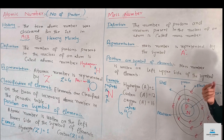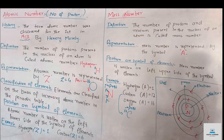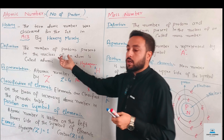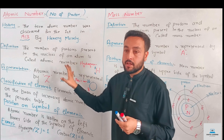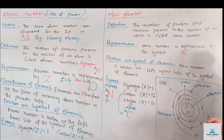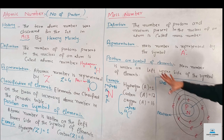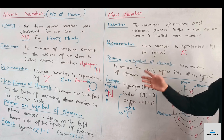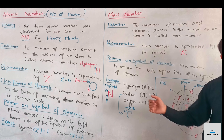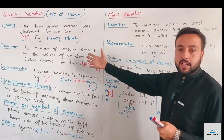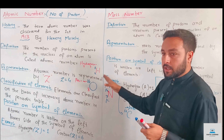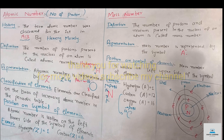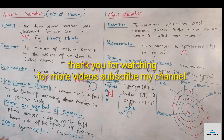The atomic number represents only the protons, while the mass number includes both protons and neutrons. The proton number equals the atomic number. The mass number is the sum of protons and neutrons. Thank you very much.